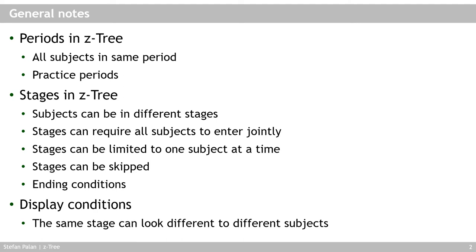In CETRI's stages, you have the option of having subjects in different stages at the same time. You can have, for example, the first subject in stage one and the second subject already in stage three. You can also have a stage that requires all subjects to enter jointly, meaning faster subjects will have to wait for slower subjects to catch up. Stages can also be limited to admit one subject at a time, and stages can be skipped.